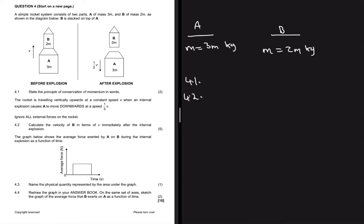Question 4.2 says the rocket is traveling vertically upward at constant speed v. When an internal explosion occurs, it causes A to move downwards at speed 1/3 v.